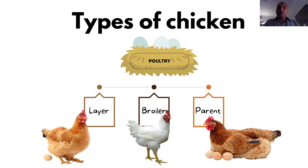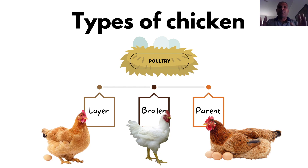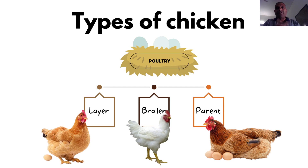For broilers you want a chicken that grows very fast and has a lot of muscle mass, because what we call meat is basically muscle. These chickens are typically reared for about 50 to 60 days - from being a chick to being an adult which is then taken to slaughter. You want these chickens to put on muscle as fast as possible.